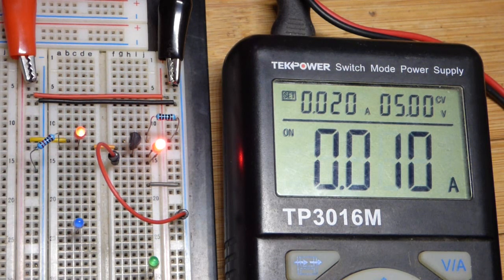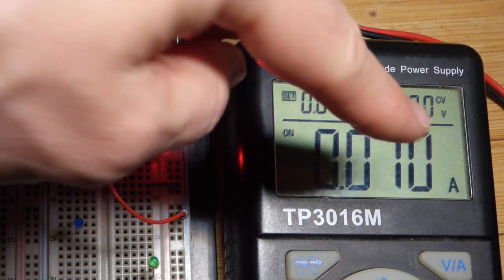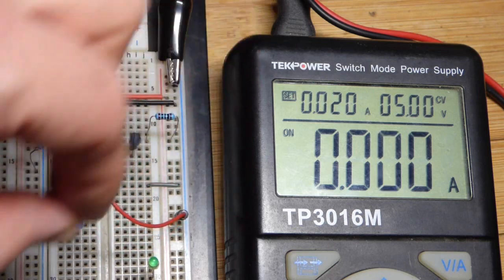And there you can see, we have about 10 milliamps of current flowing through it. A little bit of current is flowing through this LED, but hardly any. The vast majority of the current you see there is the red LED.